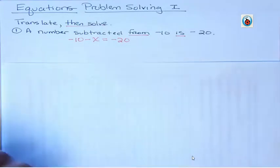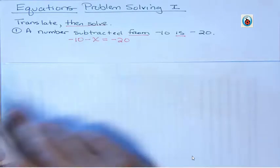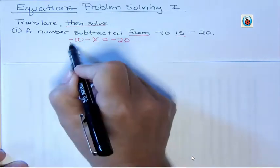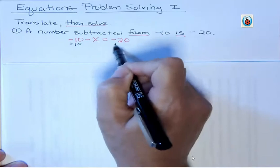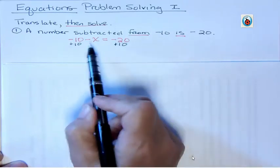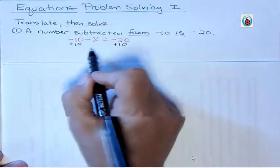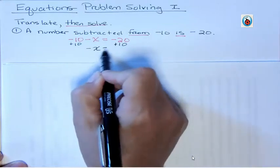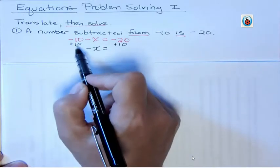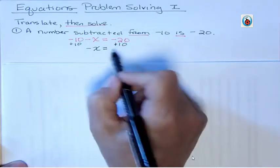We're going to translate and solve these. So now that I've translated that, I have a number that's being subtracted from negative 10, and it equals negative 20. I'm going to solve that by adding 10 to both sides, because I'm always trying to get my variable by itself. When I do that, notice that I have a minus sign in front of that x. I need to bring that down. These two additive inverses go away to 0. And negative 20 and positive 10, I have more negatives by 10.